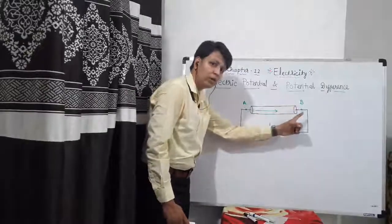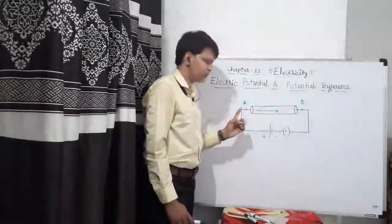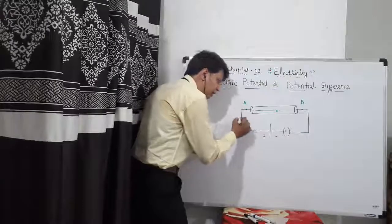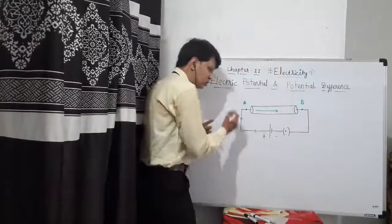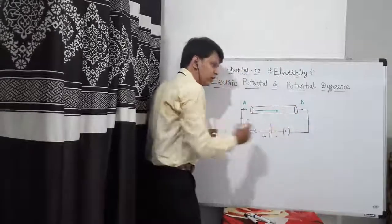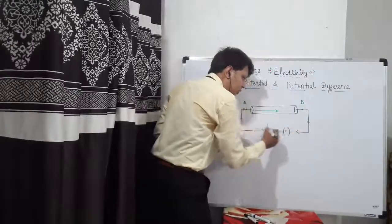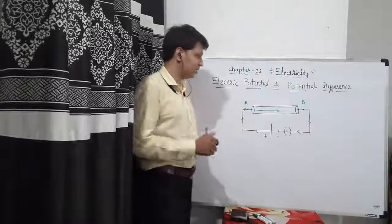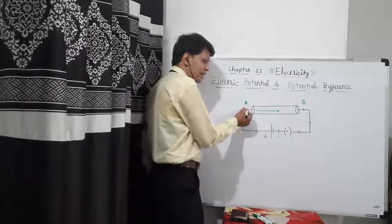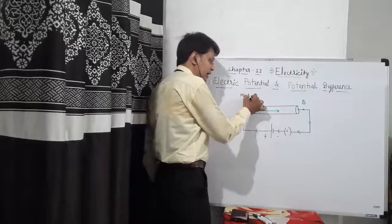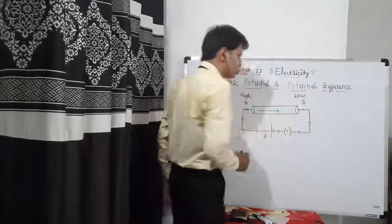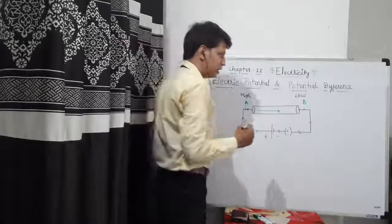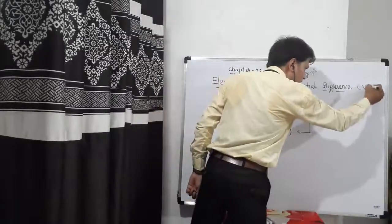Electrons flow from lower potential region to higher potential region. As per conventional current, current flows out of the positive terminal of the cell, along A to B through the conductor, and then re-enters the cell. So end A is at higher potential and end B is at lower potential. The symbol for potential difference is capital V.